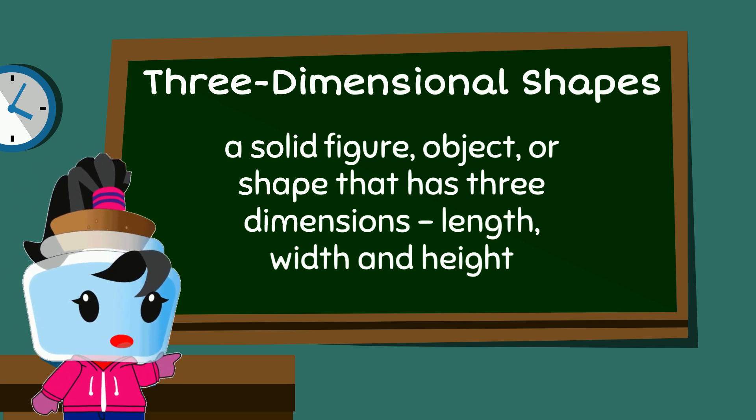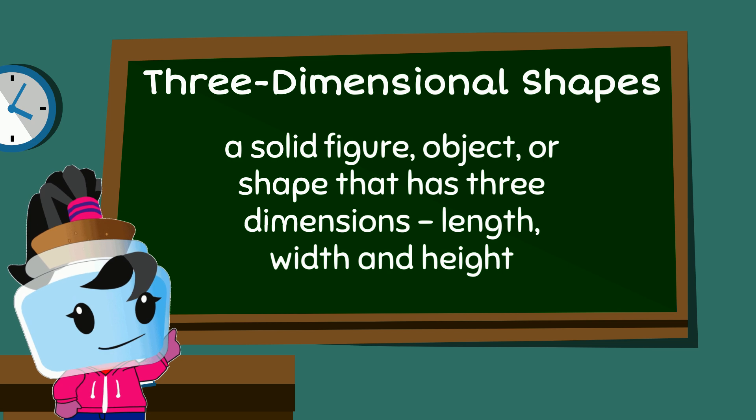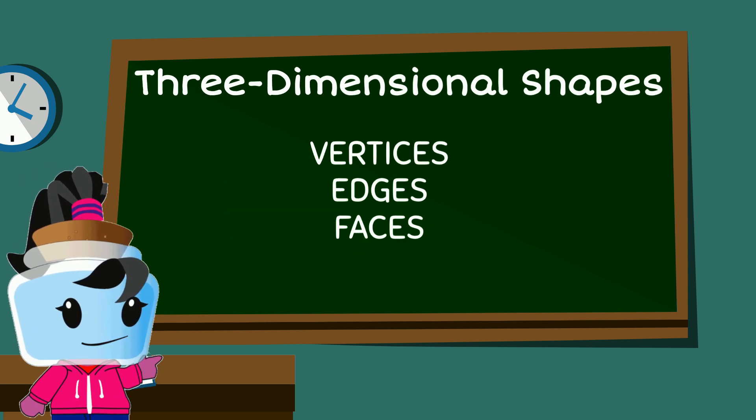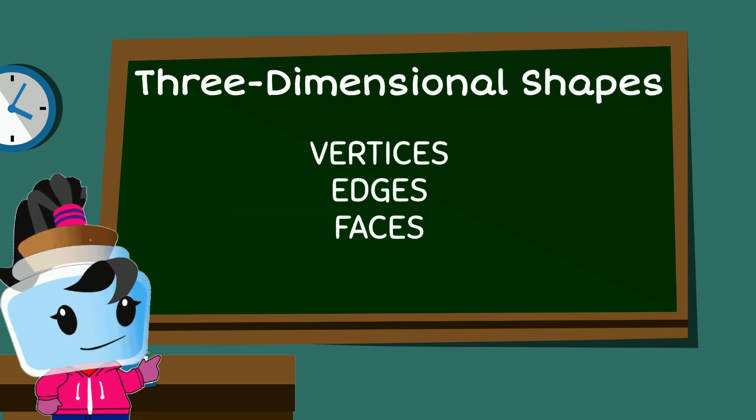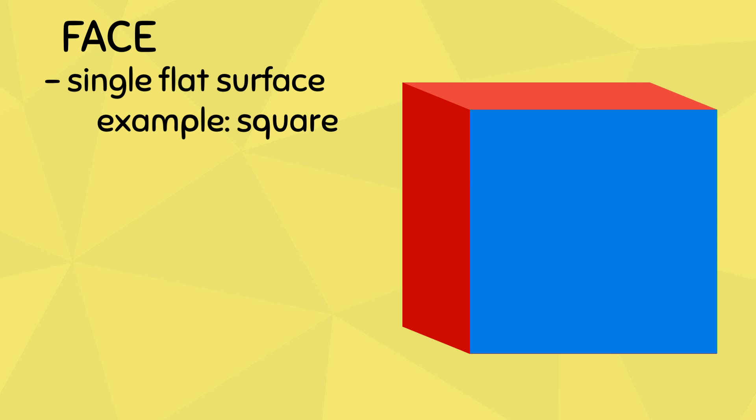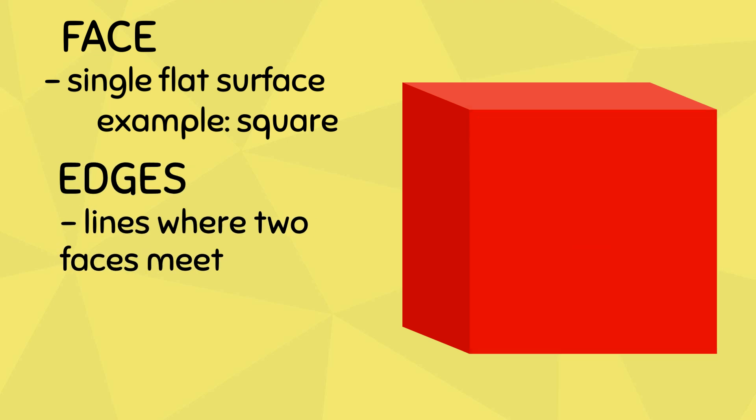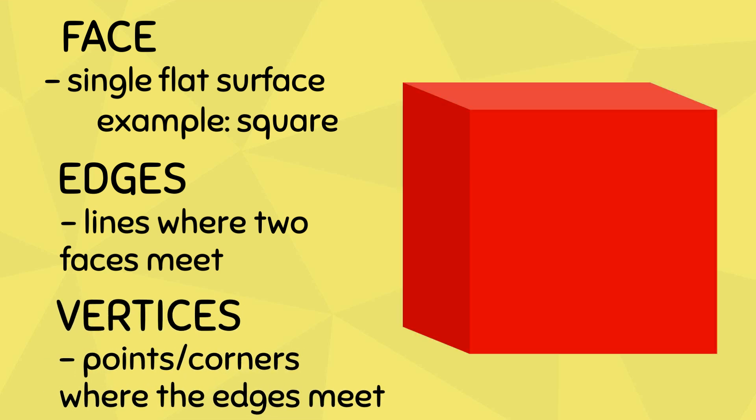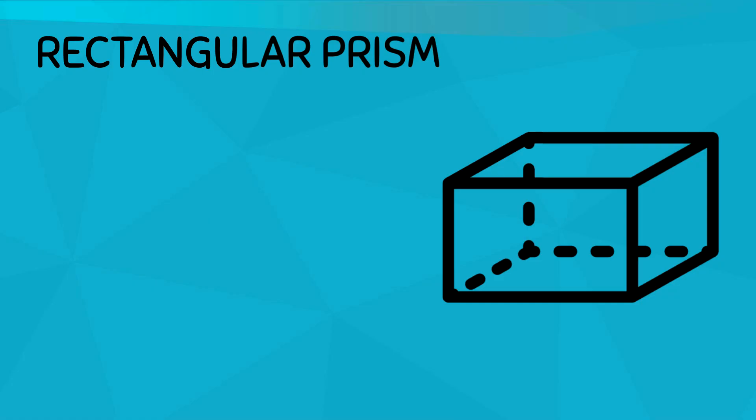To classify these 3D shapes, we will look at their vertices, edges, and faces. A face is a single flat surface, and these are usually 2D shapes that we are familiar with, for example a square. Edges are the lines where two faces meet, and vertices are the points where the edges meet.